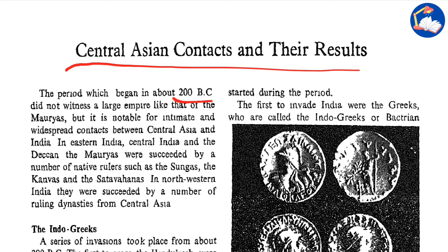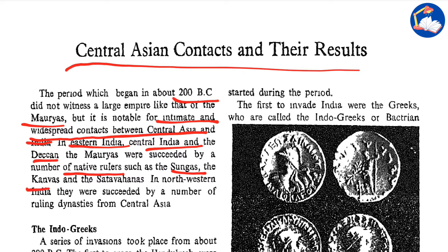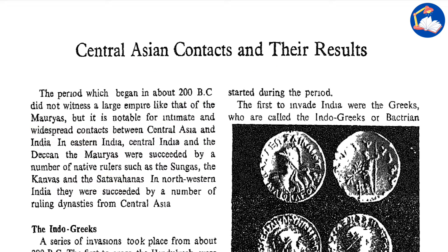The period which began in 200 BC did not witness a large empire like that of the Mauryas. In Eastern India, Central India and the Deccan, the Mauryas were succeeded by numerous native rulers such as the Shungas who came just after the Mauryas, then the Kanvas, and then the Satavahanas. In Northwestern India, they were succeeded by a number of ruling dynasties from Central Asia.